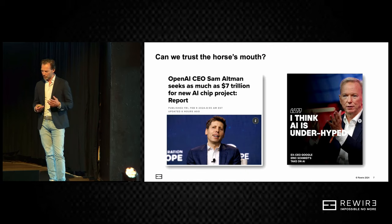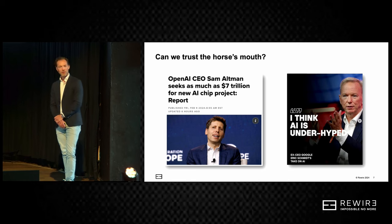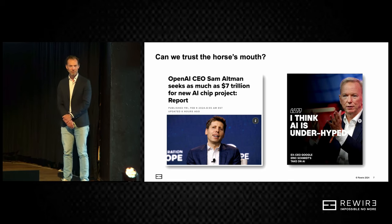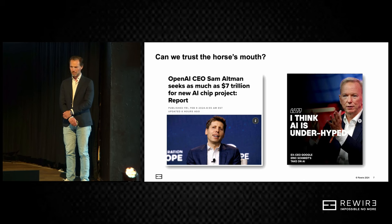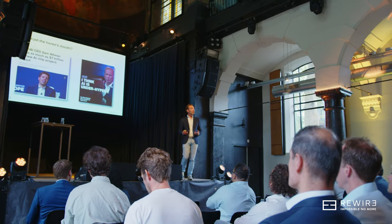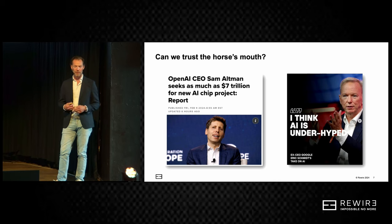To get some hints at these questions, one approach is to look at the industry leaders — the people developing all this new technology. But the question is whether we can trust them. Sam Altman is looking for seven trillion dollars — the GDP of Germany is about four or five trillion. And last week Eric Schmidt, ex-Google CEO, stated on TV that he thinks AI is actually under-hyped, and that the arrival of a non-human intelligence is a very, very big deal.